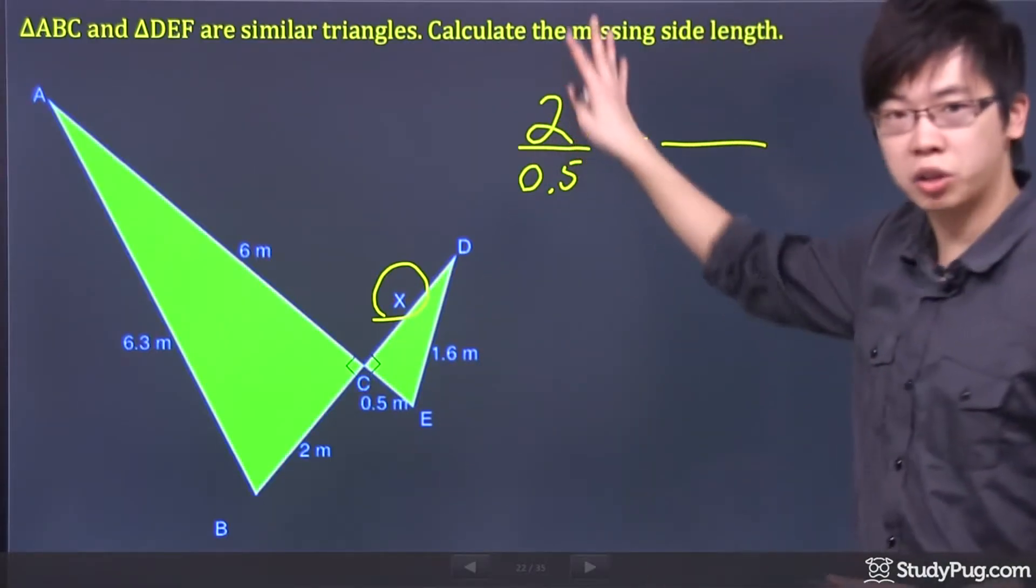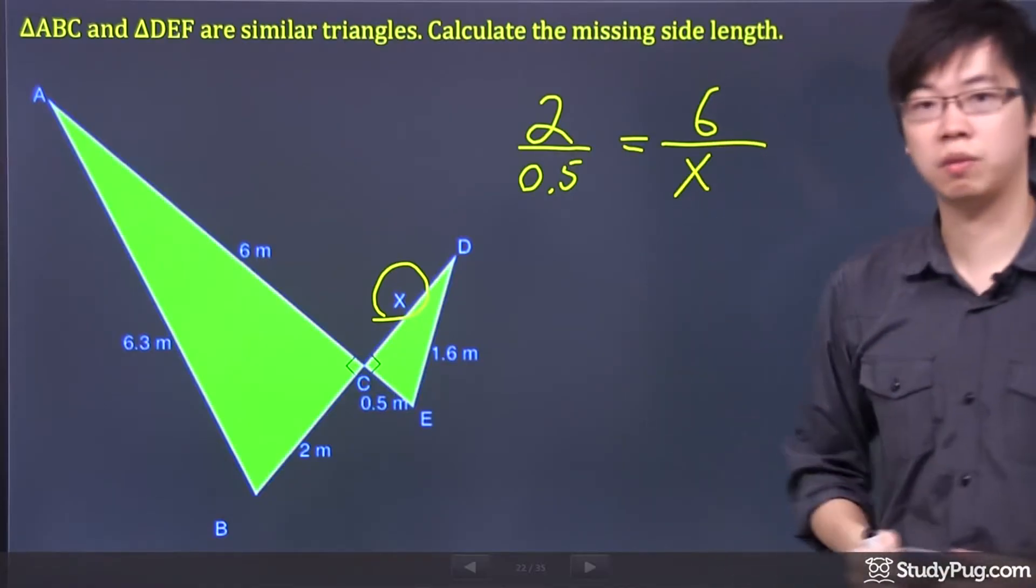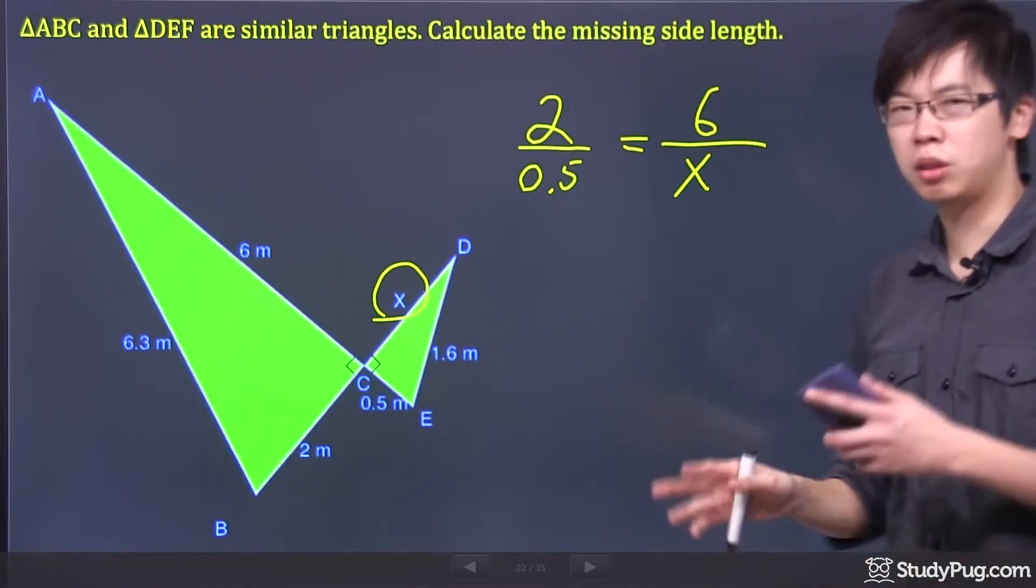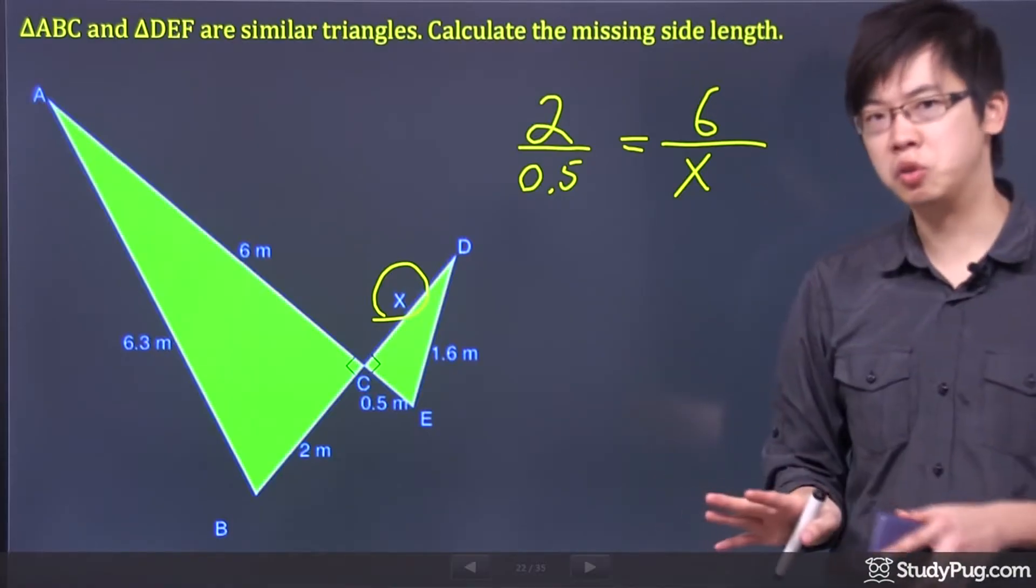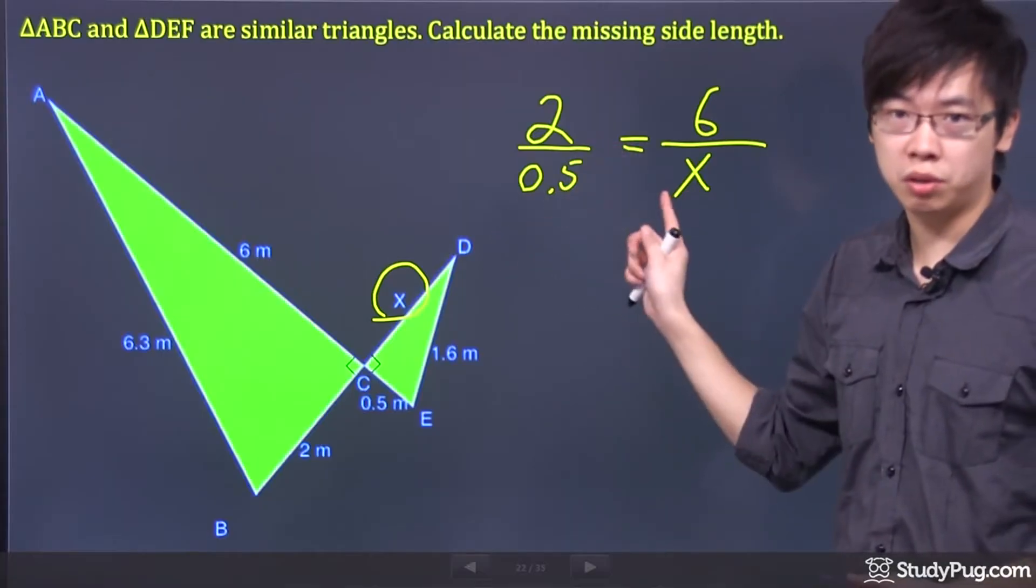So once again, the bigger on the top, smaller on the bottom just because the math is easier. The 6 over here and the x is over here. Now maybe you're not good with the algebra but you can just think about this. They are the same ratio to each other.